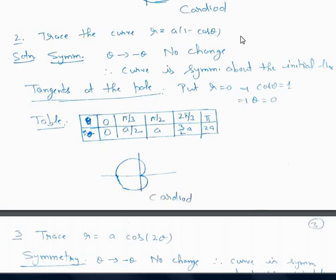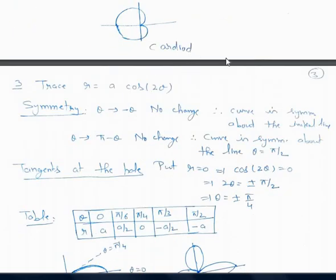When theta is 0, R is 0 (since cos 0 = 1, so 1 - 1 = 0). When theta is pi/3, R is A/2. When theta is pi/2, R is A. When theta is 2pi/3, R is 3A/2. When theta is pi, R is 2A. We join these points to get the upper portion of the curve, then take the mirror image below the initial line. This curve is also a Cardioid.